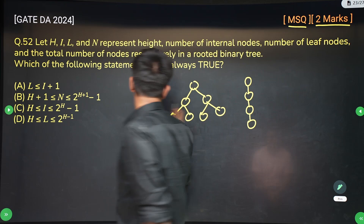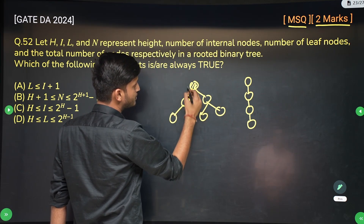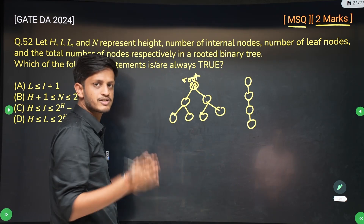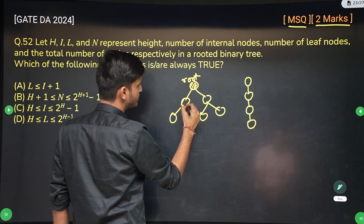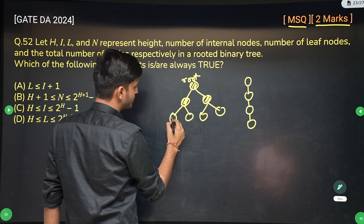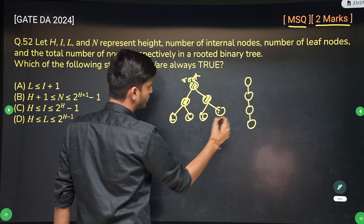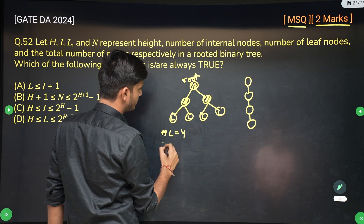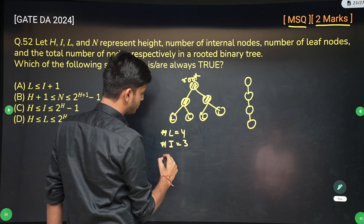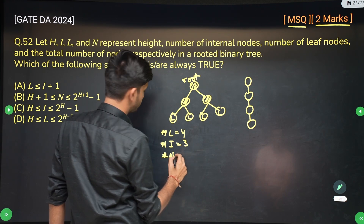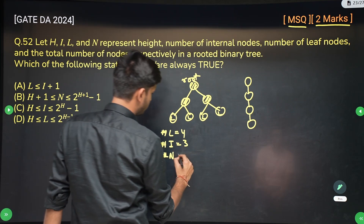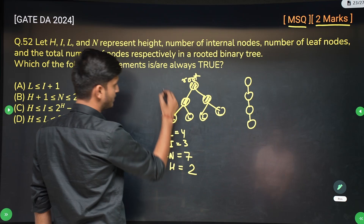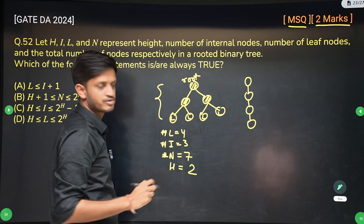For example, the root is also an internal node. Every node which is not a leaf node is an internal node. In this complete binary tree, the leaf nodes are 4, the internal nodes are 3, total number of nodes is 7, and the height of this tree is 2 — height being the distance between root and leaf.